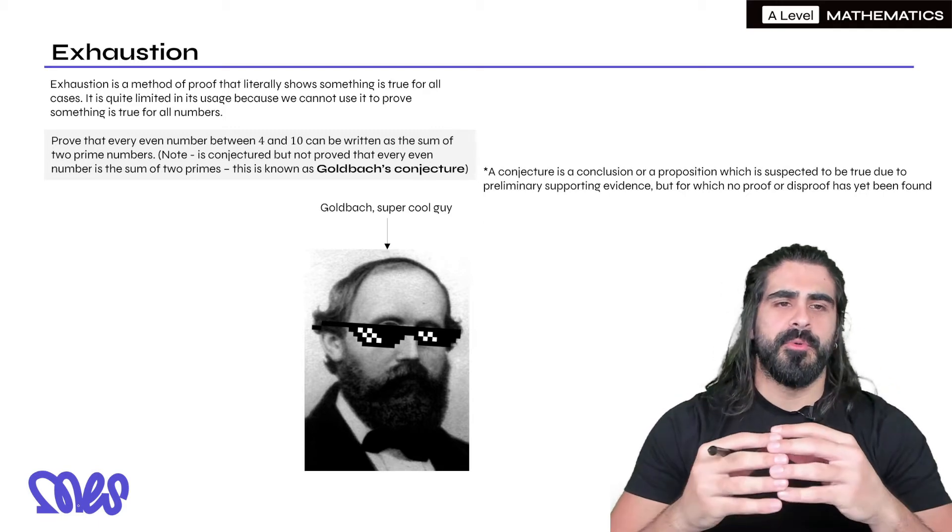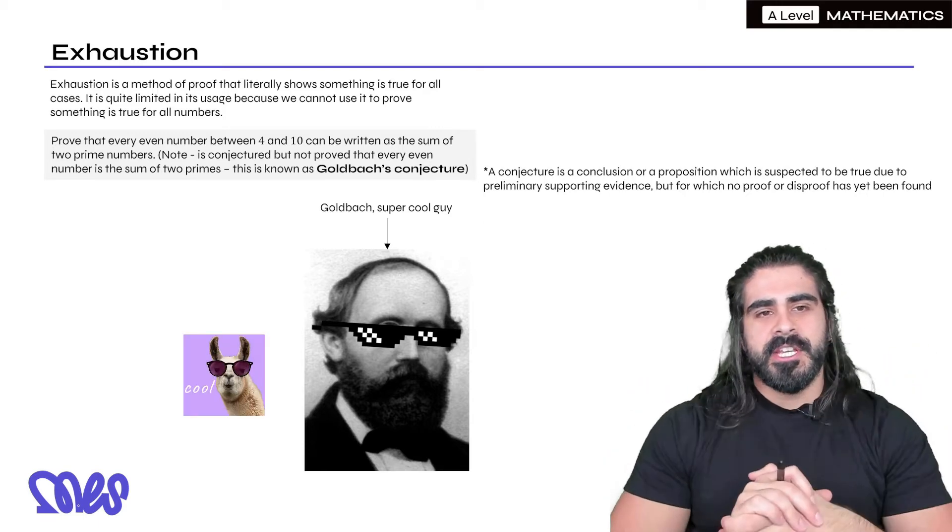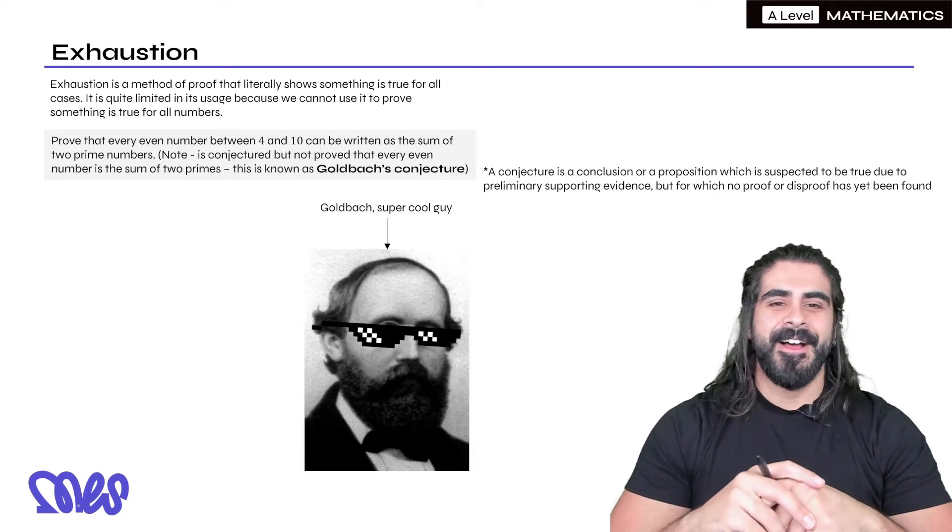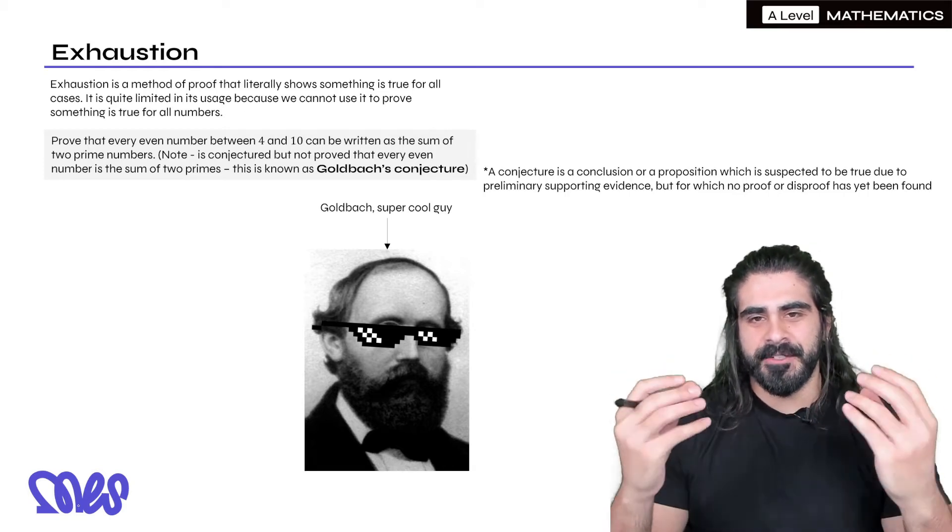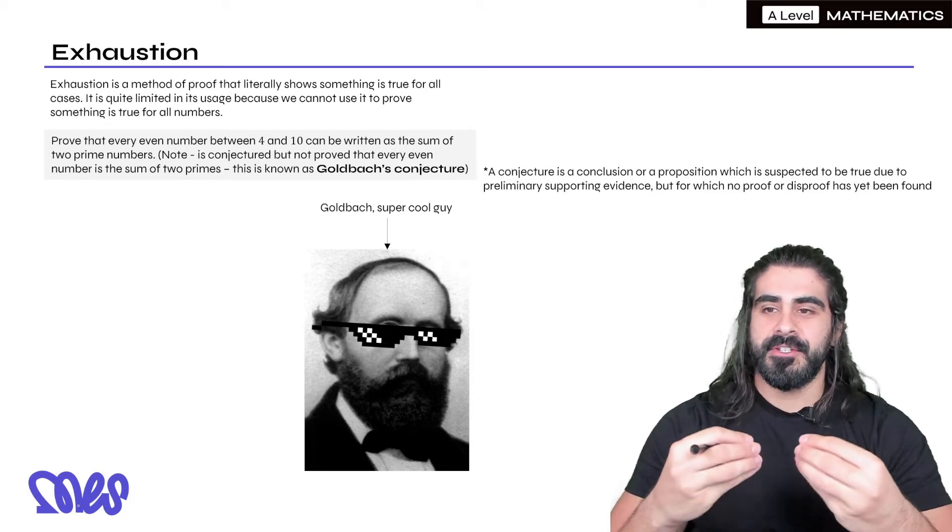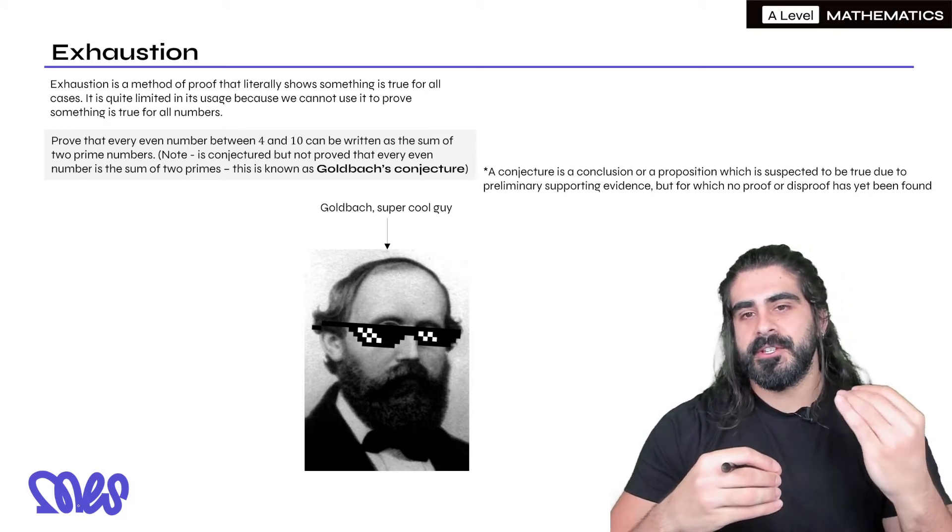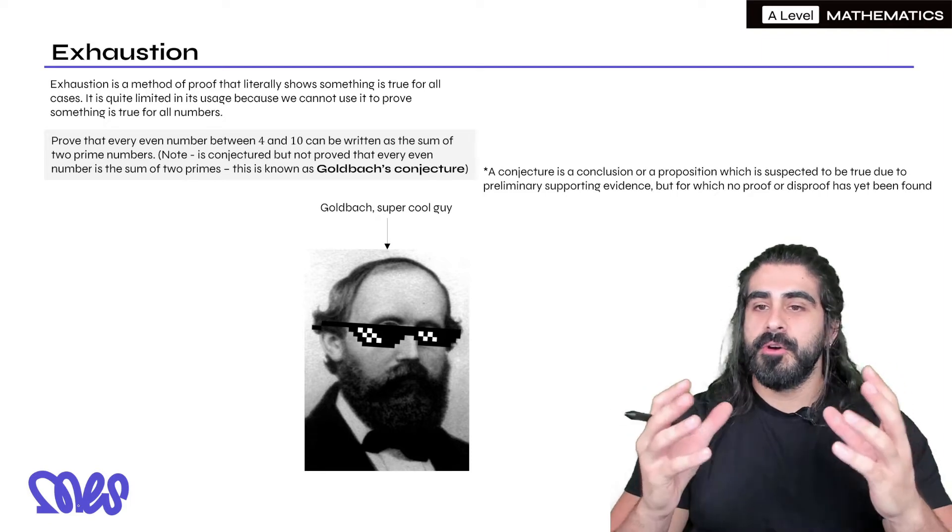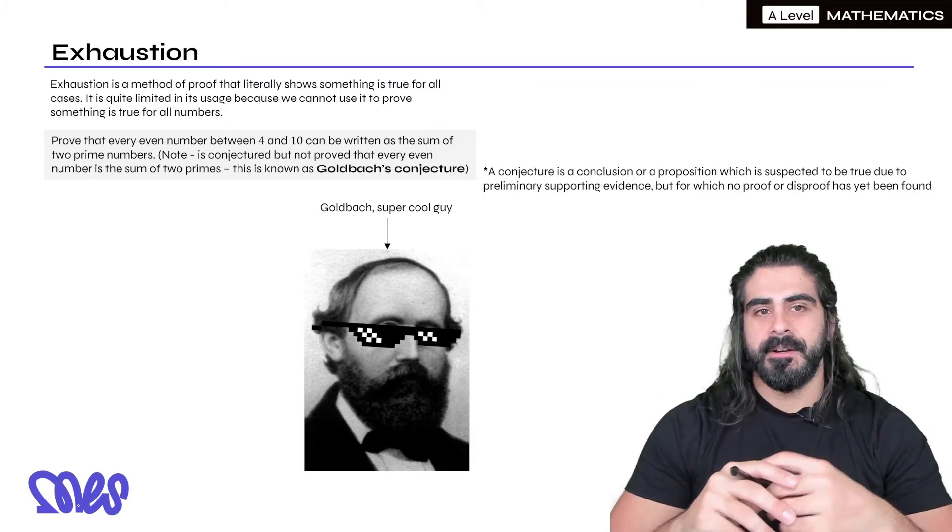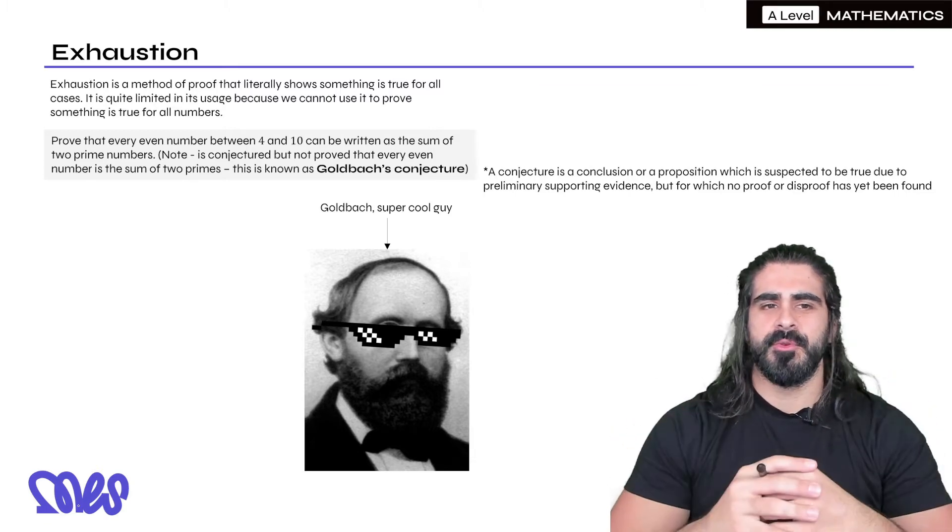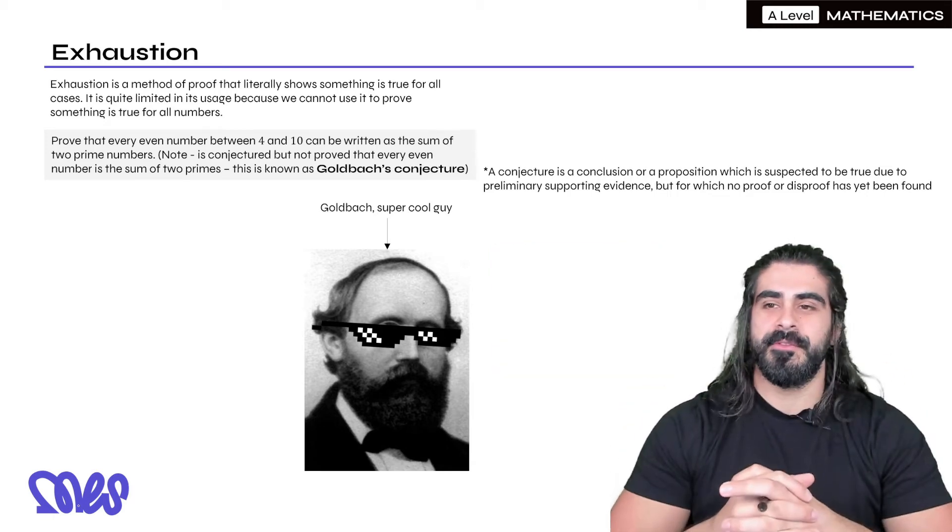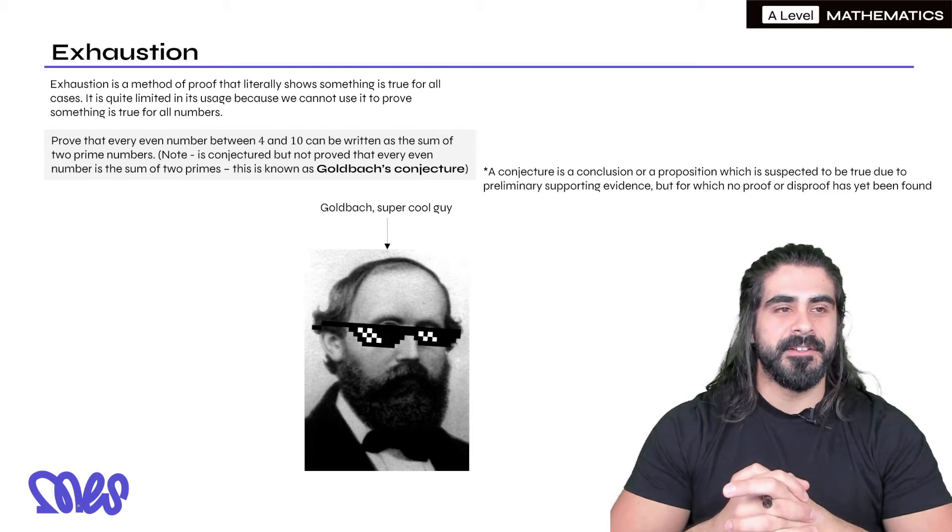This is known as Goldbach's conjecture. So if you look below, there's Goldbach, super cool guy, just came up with some rule and then just disappeared. A bit like Fermat. So what is a conjecture? A conjecture is a conclusion or a proposition which is suspected to be true due to preliminary supporting evidence of which no proof or disproof has yet been found. Although Fermat's last theorem has been proved now but he ended up saying something and then also disappeared. But this one has not been proved yet so maybe one of you guys will end up proving it one day and earn a lot of money for that.